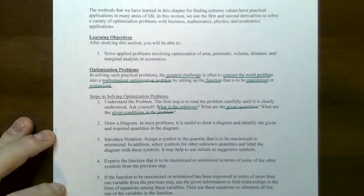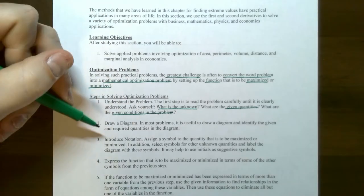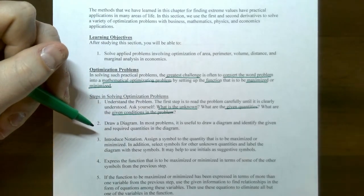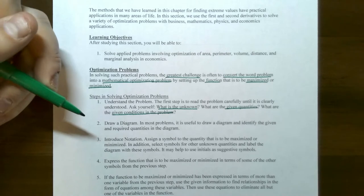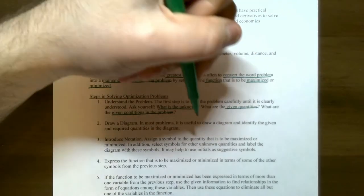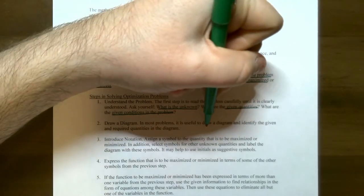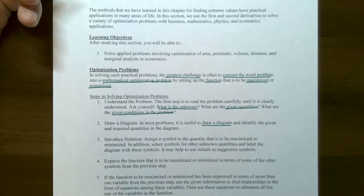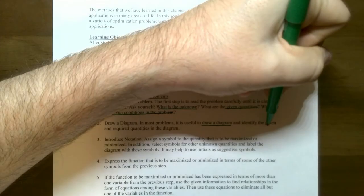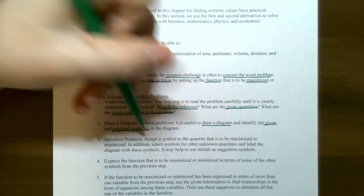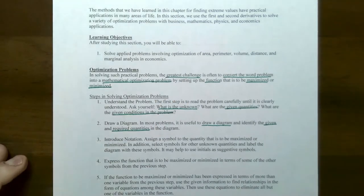Once you've read the problem, it always helps to draw a diagram because most of the problems will involve area, perimeter, volume, or surface area. So draw a diagram, identify the given and required quantities, and in your diagram label what's unknown and what is given.